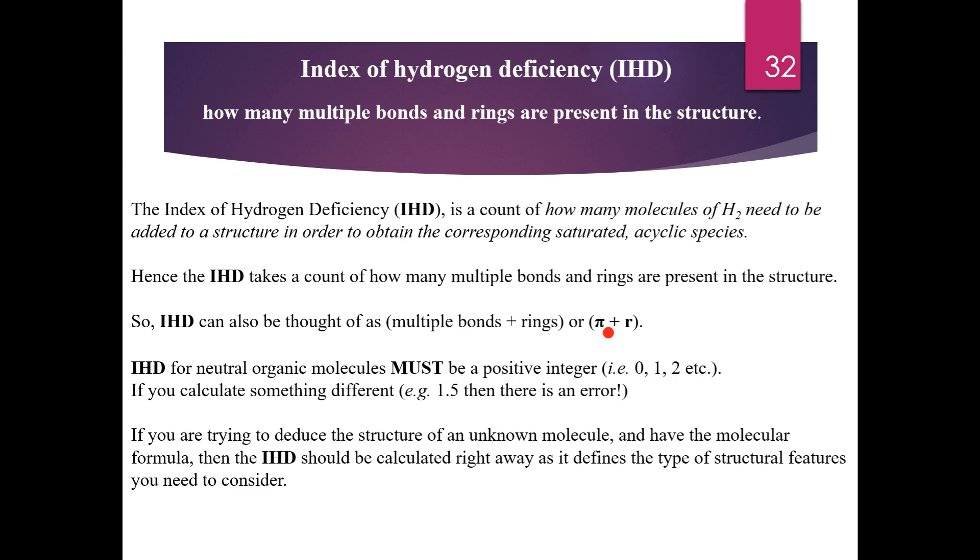What is IHD? As the name suggests, it is index of hydrogen deficiency. This gives you the number of hydrogens deficient in a particular structure, or in simple words, it gives you information about the number of multiple bonds or rings present in the structure. IHD is a count of how many molecules of H2 are needed to be added to the structure to obtain the corresponding saturated or acyclic species.